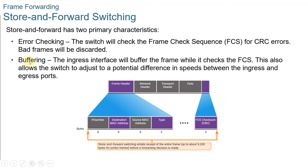The second characteristic is buffering. The ingress port buffering process used by store-and-forward switches provides the flexibility to support any mix of Ethernet speeds. For example, handling an incoming frame traveling into a 100 Mbps Ethernet port that must be sent out a 1 Gbps interface requires the store-and-forward method. With any mismatch in speeds between the ingress and egress ports, the switch stores the entire frame in a buffer, computes the FCS, forwards it to the egress port buffer, and then sends it.